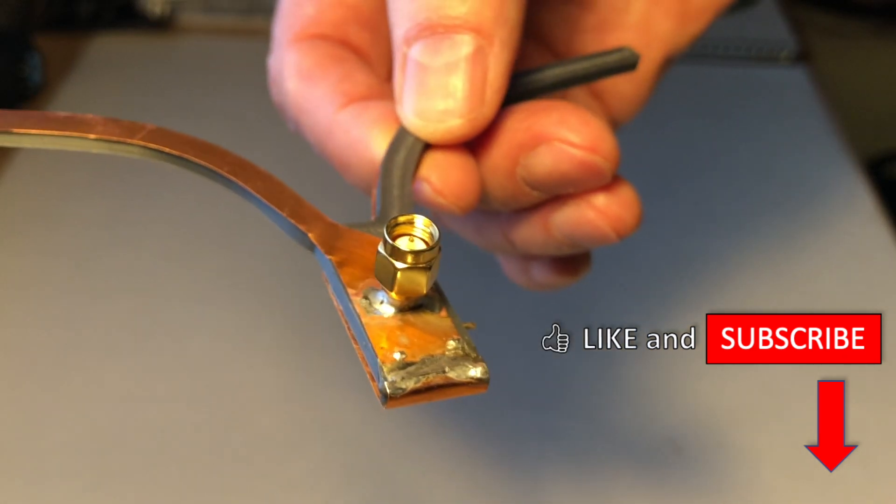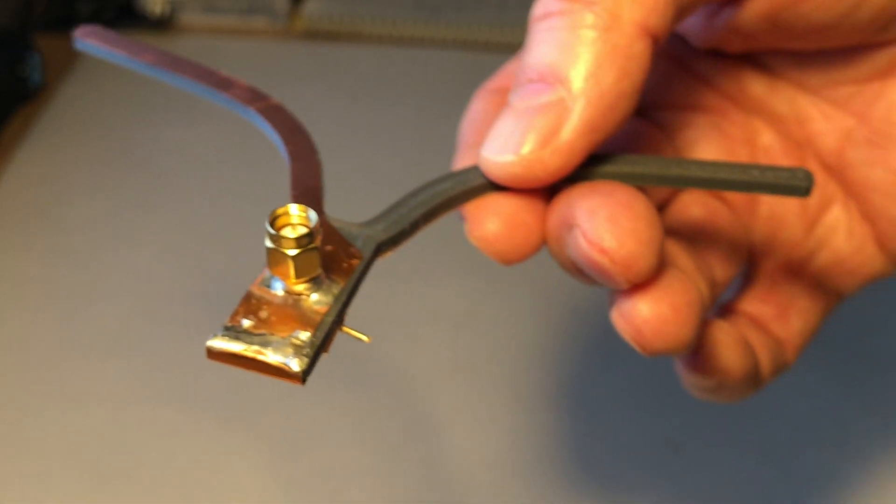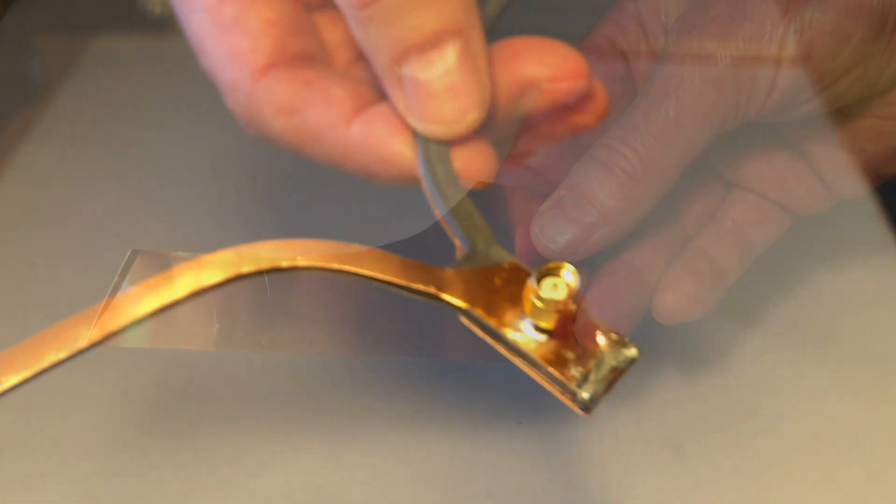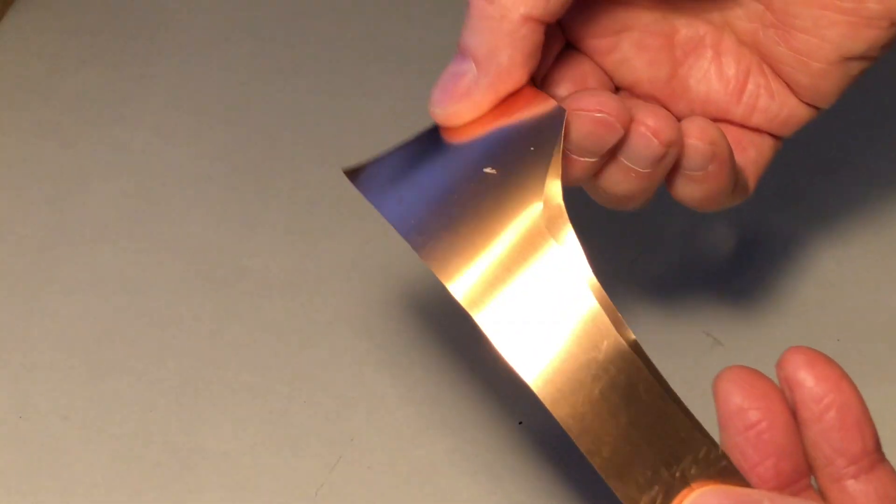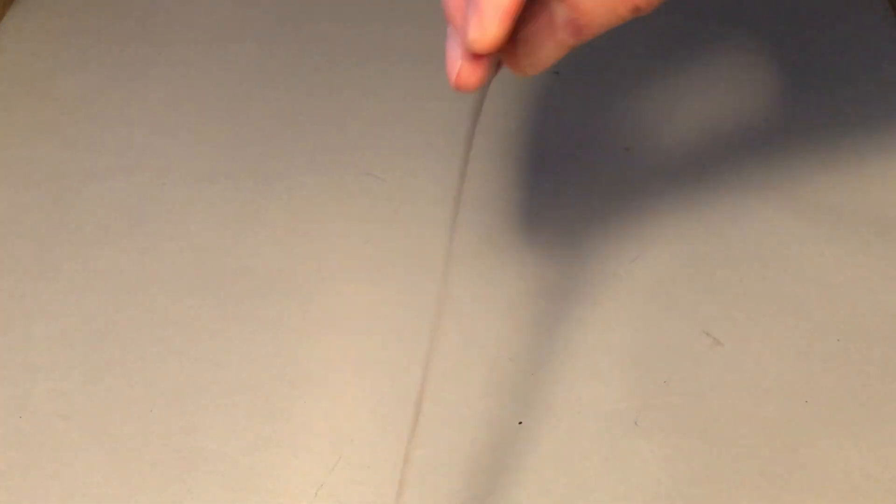I used the 3D printed frame as a template to cut out the parts for the actual antenna from sheet copper. In my case the thickness of the sheet is 0.1 mm. The thickness and the material of the sheet do not play a big role. You could also use other materials instead.